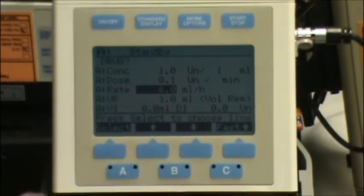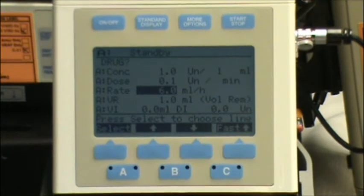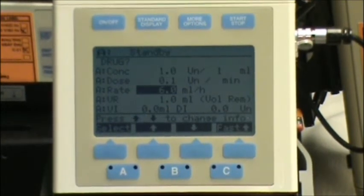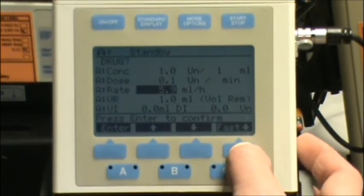but I'm just going to fast forward to where I put my rate in, milliliters per hour. Now I have memorized that a 1 to 1 concentration of vasopressin for a dose of .04 units a minute comes out to 2.4 mLs an hour. So I'm going to put in 2.4.